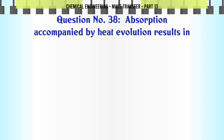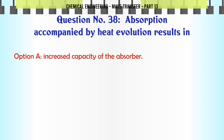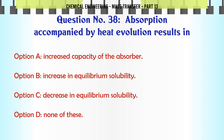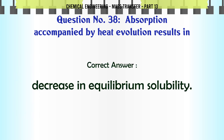Absorption accompanied by heat evolution results in: A. Increased capacity of the absorber. B. Increase in equilibrium solubility. C. Decrease in equilibrium solubility. D. None of these. The correct answer is: Decrease in equilibrium solubility.